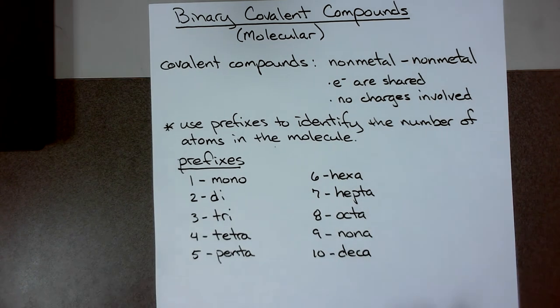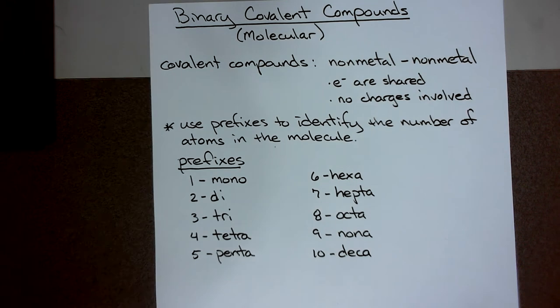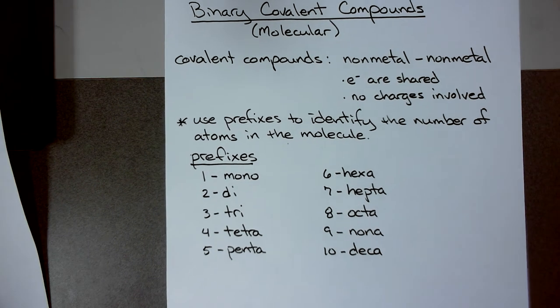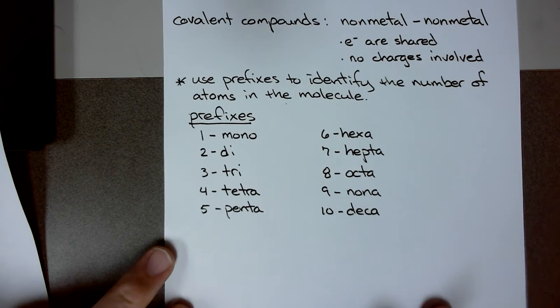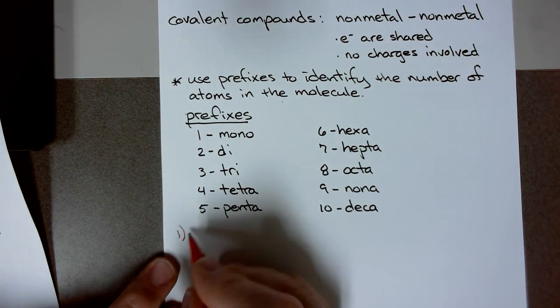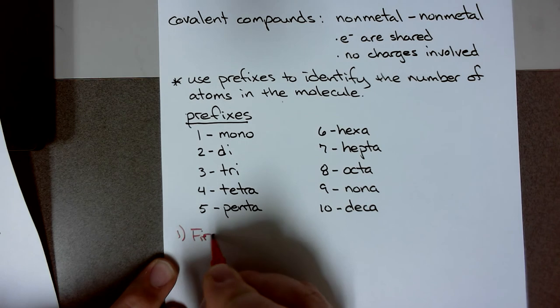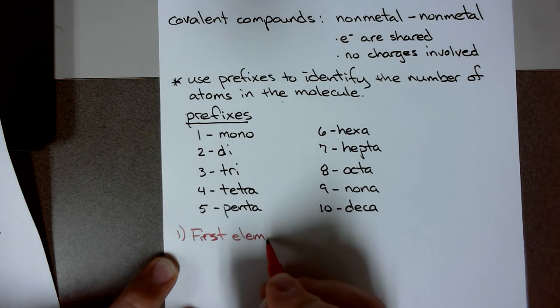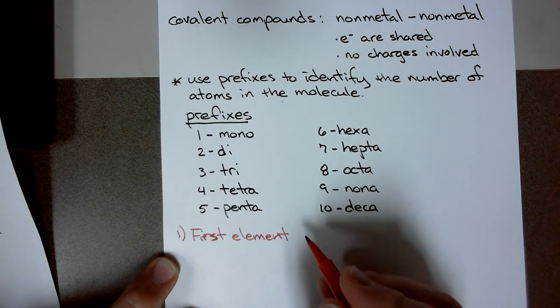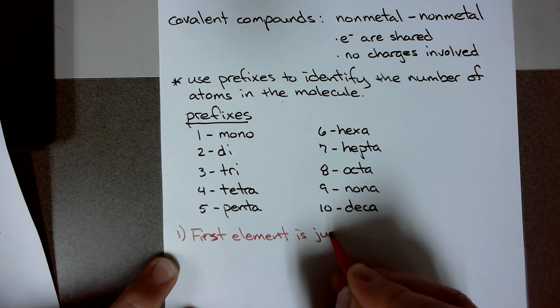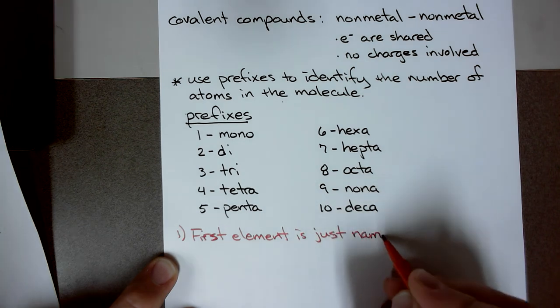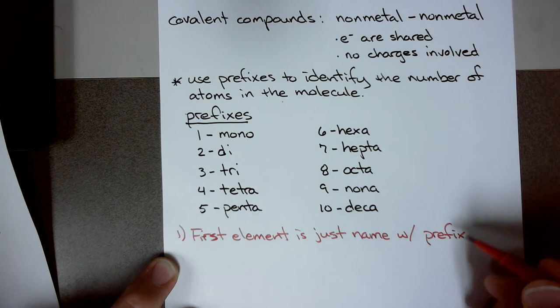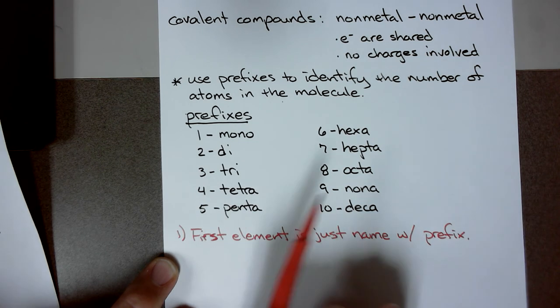There are only two basic rules that you have to follow in naming covalent compounds or binary covalent compounds. Let's go through those two rules. Rule number one: the first element is just the name of the element with the prefix, the prefix with name to indicate the number of atoms. The prefixes are indicating the number of atoms.